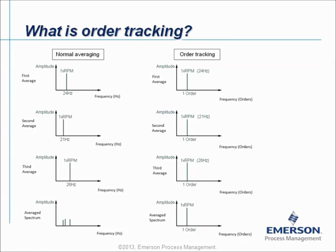Normally when vibration data is collected on rotating equipment, we do something called spectrum averaging. That means that in reality, vibration data coming into an analyzer generates a waveform-based spectrum, but the final spectrum is not represented at a single moment in time. This process is repeated several times and an average spectrum is stored to give a good representation of the vibration data and to eliminate random or one-time vibration sources.